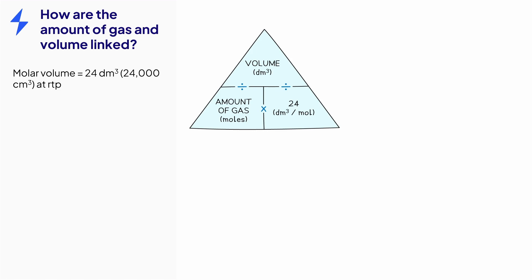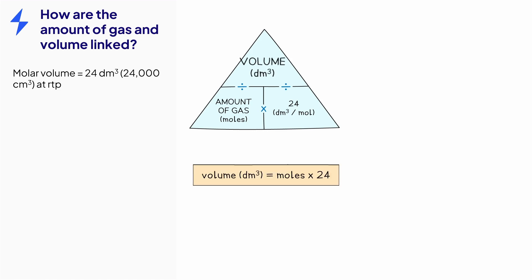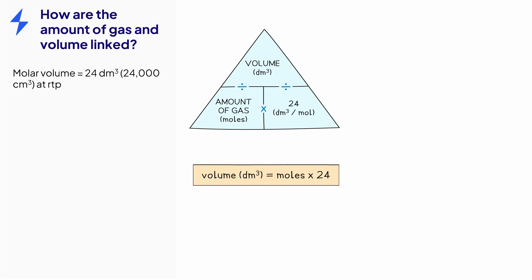The relationship between volume of a gas and the number of moles at room temperature and pressure is shown in this equation triangle. From this, we can see that the volume in decimetres cubed is equal to the amount of gas in moles multiplied by 24. Using the equation triangle, we can also determine that the amount of gas in moles is equal to the volume in decimetres cubed divided by 24.